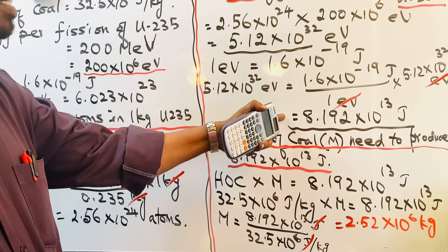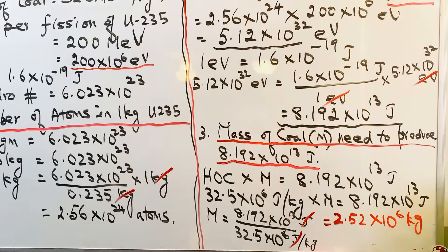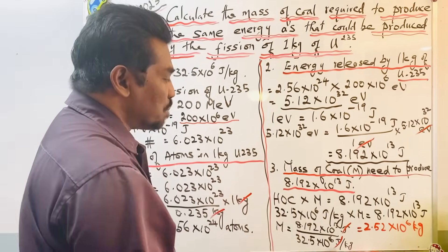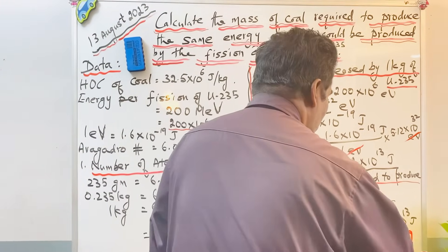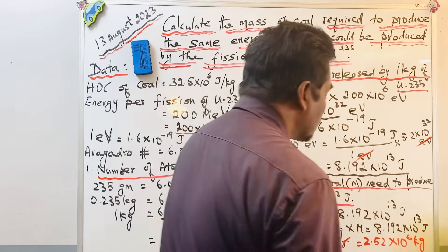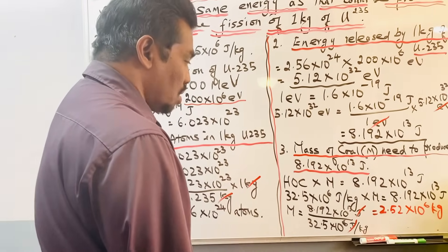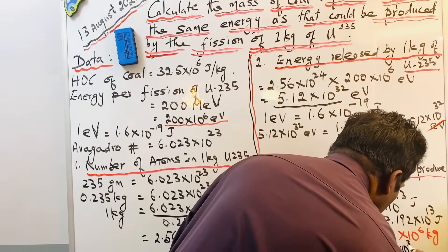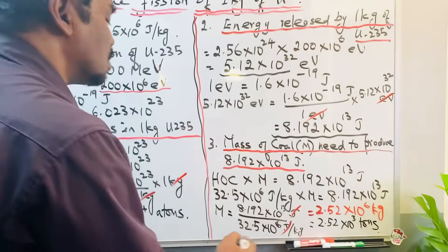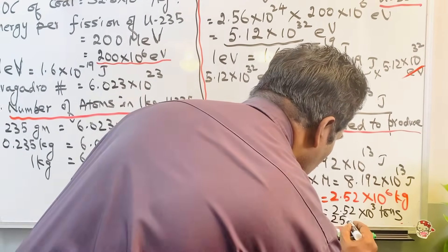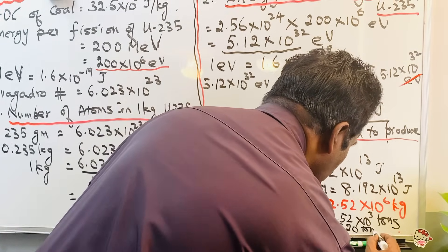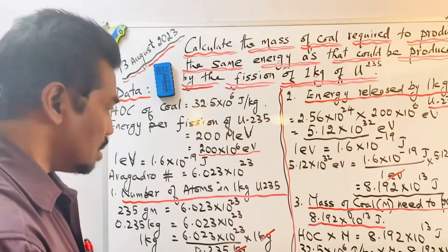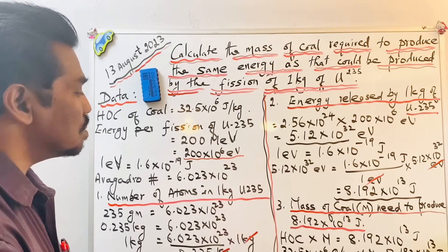We can also express this in metric tons. Since 1 metric ton equals 1000 kilograms (10³), dividing 2.52 × 10⁶ kilograms by 10³ gives 2.52 × 10³ metric tons, or 2,520 tons of coal. So 2,520 tons of coal is needed to produce the energy released by 1 kilogram of uranium-235. This is our final answer.